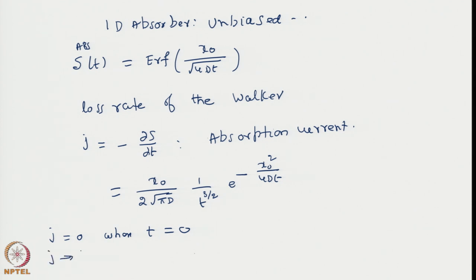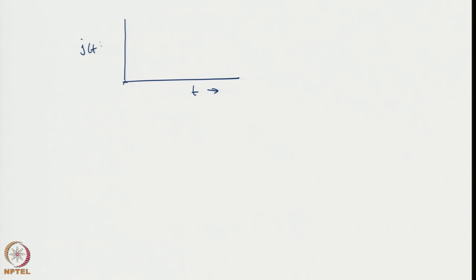And J tends to t^(−3/2) as t tends to infinity. So the current slowly tends to 0 as a power law, specifically as t^(−3/2). One can plot the current distribution: it is 0 at t = 0, the absorption current J(t) rises and then decays like a power law.